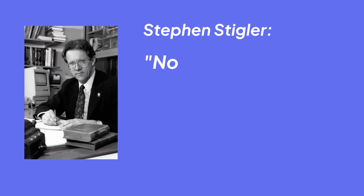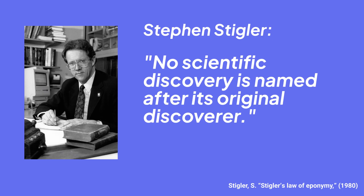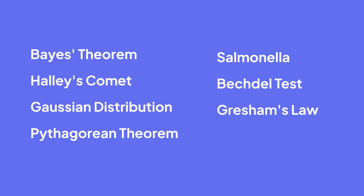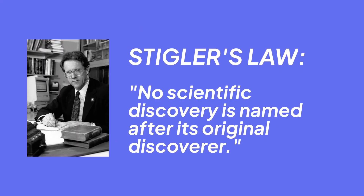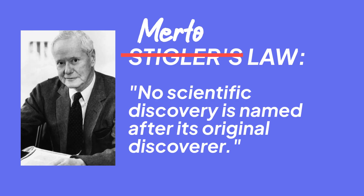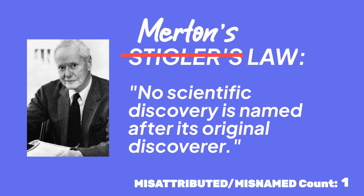Observing this, statistician Steven Stigler said no scientific discovery is named after its original discoverer. Examples abound. Our brains crave simple narratives, so credit accrues to the popularizer or the prestigious. To prove his point, Stigler named his idea Stigler's Law and then revealed he didn't discover it. The idea originated with sociologist Robert K. Merton. But this is just the beginning — come with me on a Stigler's Law journey.